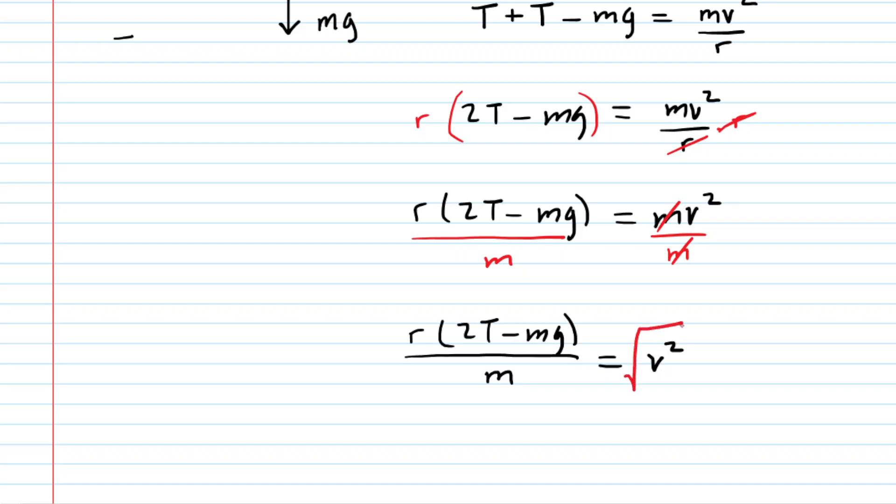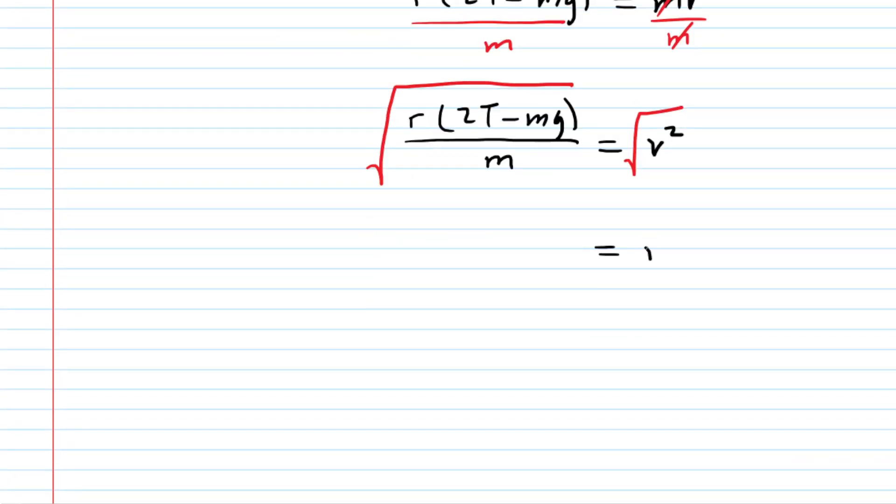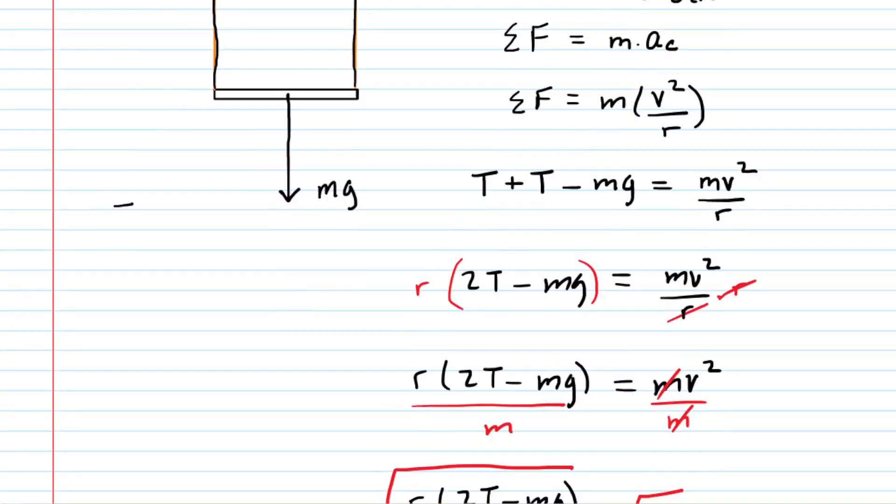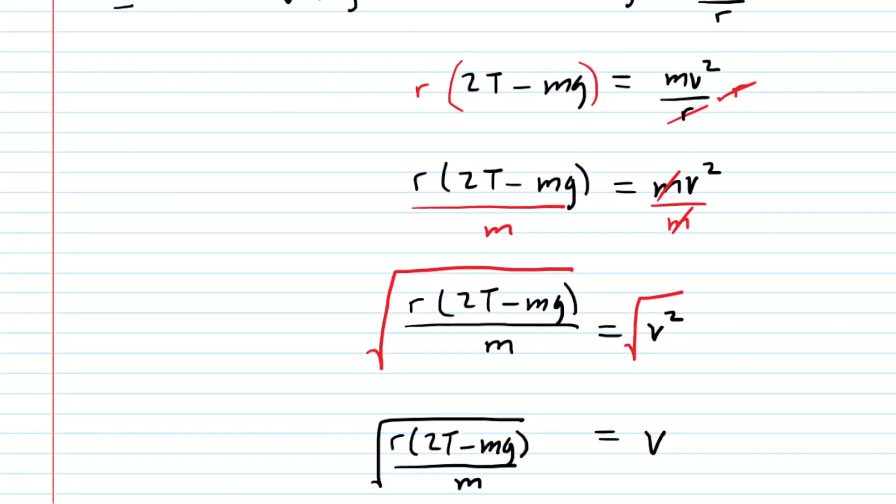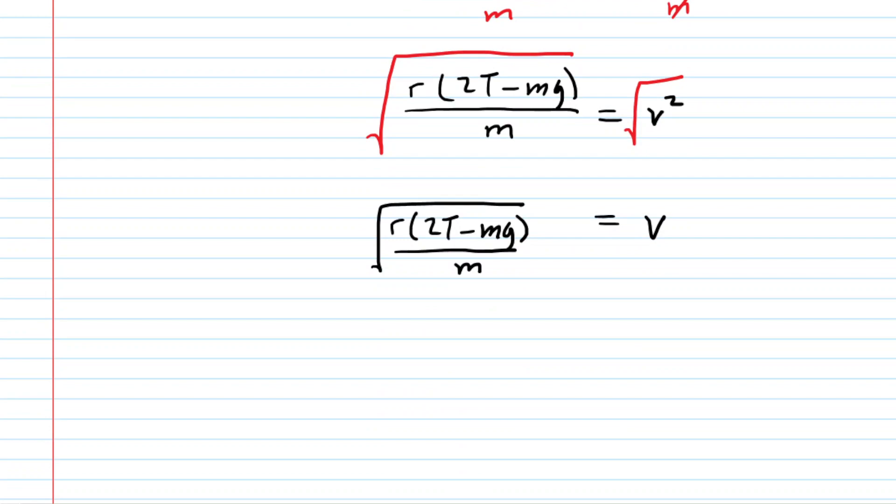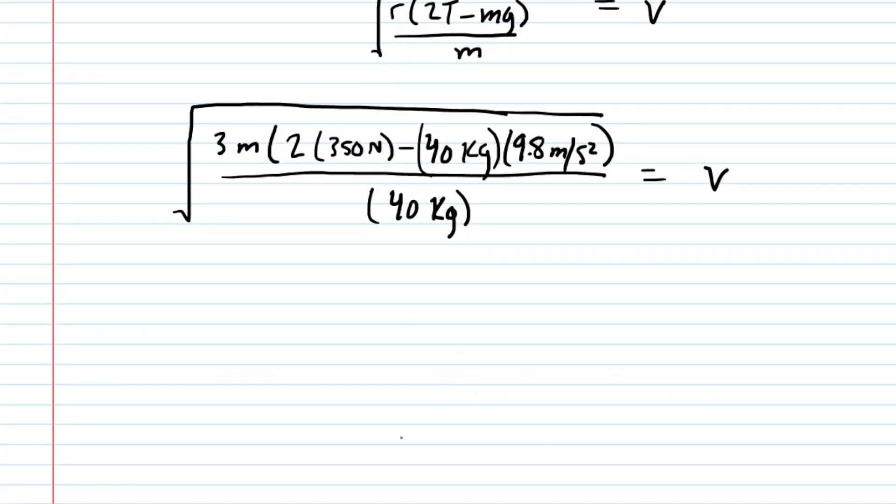And then finally, let us take the square root of both sides of the equation. That allows us to solve for the speed, V. And now we'll just plug in the known values. We didn't yet list the mass, M, but that was given in the question as 40 kilograms. So now we can go ahead and plug in all the known data. And once we simplify, we should get a speed of approximately 4.81 meters per second.